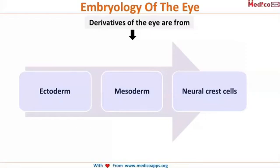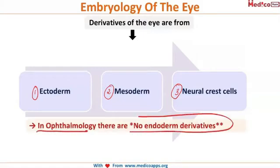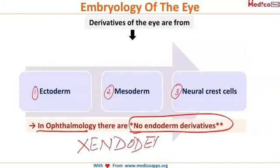In the embryology of the eye, the derivatives come from three germinal layers: number one, ectoderm; number two, mesoderm; and number three, neural crest cells. There is no endoderm involved in ophthalmology, so that option is ruled out completely. You will have to choose from either ectoderm, mesoderm, or neural crest cells.